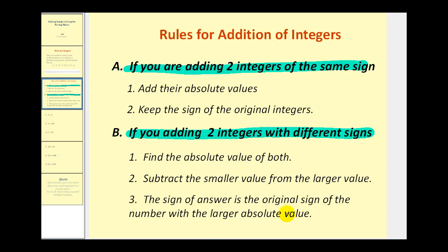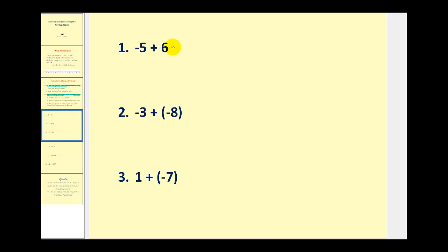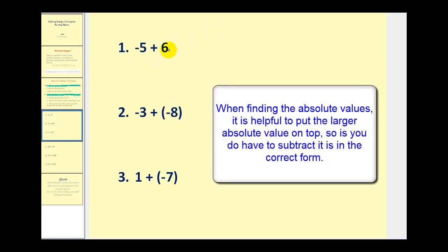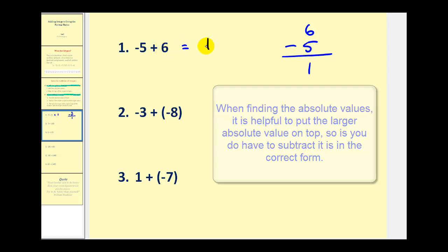Let's go ahead and see how this works out. For example number one, we have negative five plus six. We have two integers with different signs, so we take their absolute values. The absolute value of negative five is five, and the absolute value of six is six. Because they have different signs, we subtract the smaller from the larger — six minus five is one. To determine the sign of the sum, we take the sign of the number with the larger absolute value. Six had the larger absolute value, six is positive, so the sum is positive one.